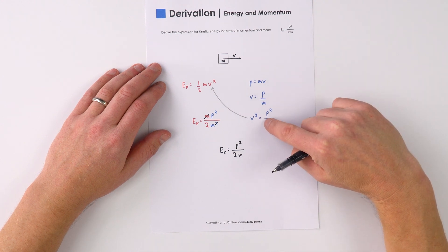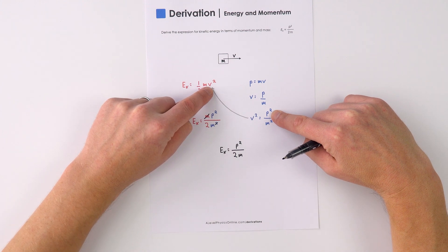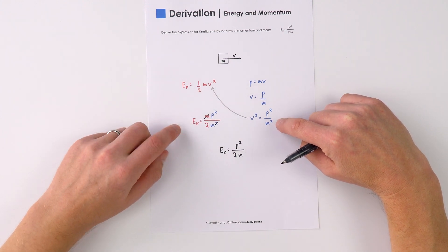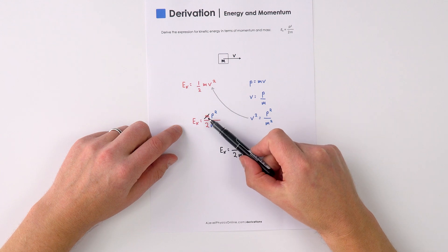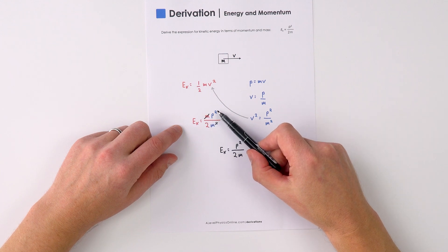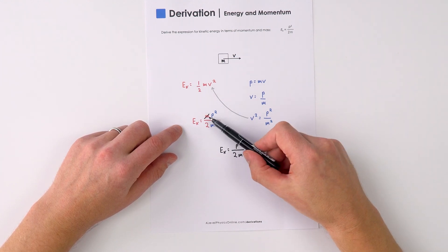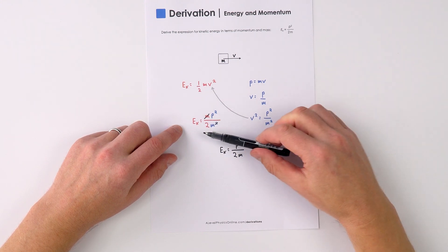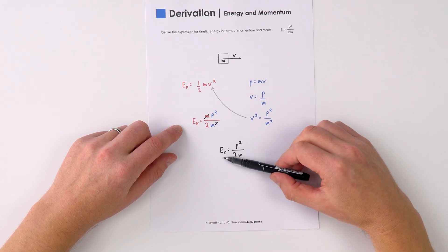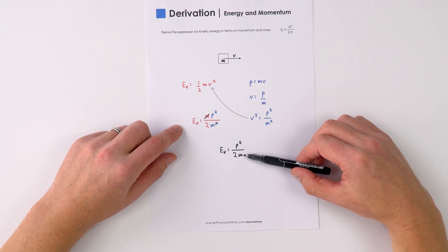And if we use this, we can substitute v squared for p squared over m squared to say that the kinetic energy is equal to mp squared over 2m squared. There's an m and an m squared here, so they cancel, and therefore kinetic energy is equal to p squared divided by 2m.